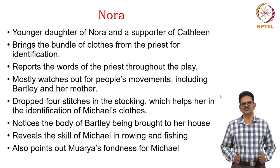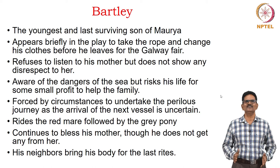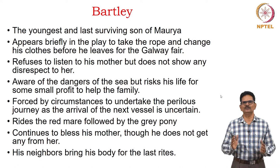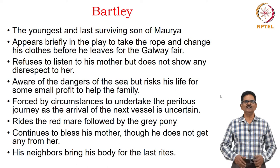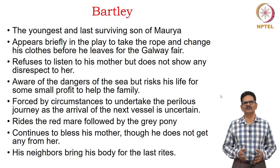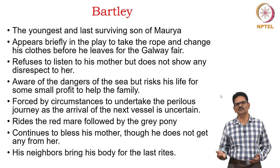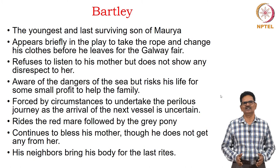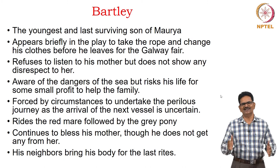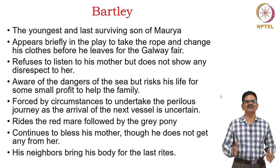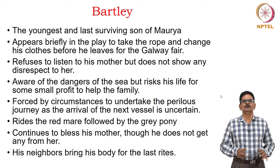Bartley is the youngest and last surviving son of Maurya. He appears briefly in the play to take the rope and change his clothes before he leaves for the Galway Fair. He refuses to listen to his mother but shows no disrespect to her. He is aware of the dangers of the sea but risks his life for a small profit to help the family, forced by circumstances since the arrival of the next boat is uncertain. He rides a red mare followed by the grey pony, which he plans to sell. He continues to bless his mother though he receives no blessing from her.